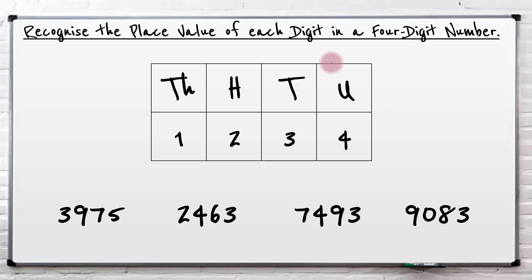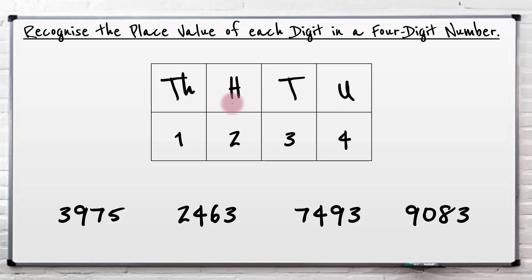The first and most important thing is you've got to understand your place value. So here in this number we have got four units, then beside the units is always the tens, then we've got the hundreds and then we've got the thousands. So units, then tens, then hundreds, then thousands. So this number has got four units, three tens, two hundreds and one thousand.